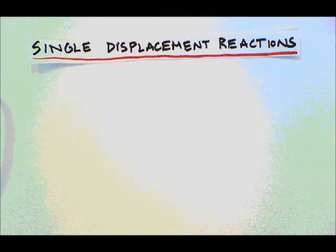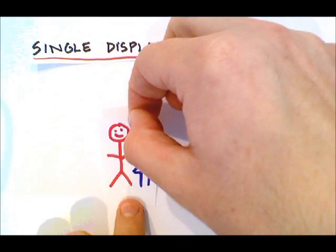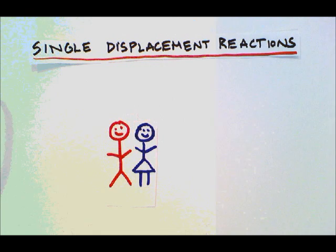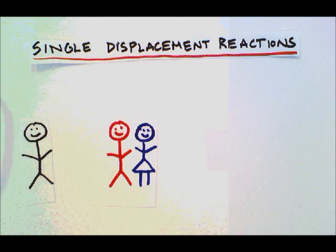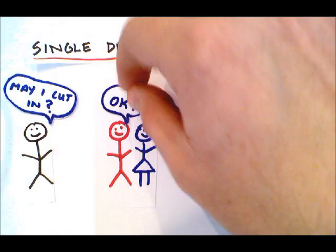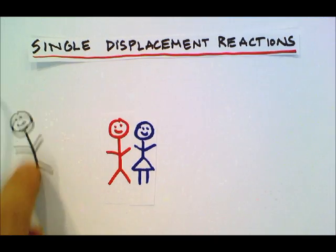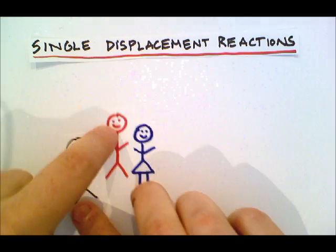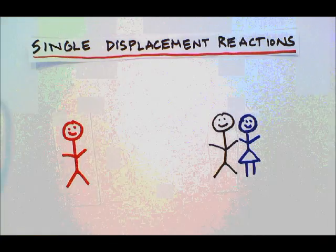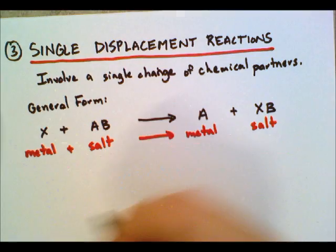Going back to our scenario of people for the single displacement reaction: we've got our couple at the dance, and someone else comes up and says 'may I cut in?' The two guys switch places and now the female is dancing with a new partner — essentially a single displacement reaction.